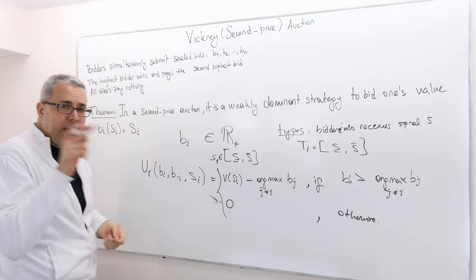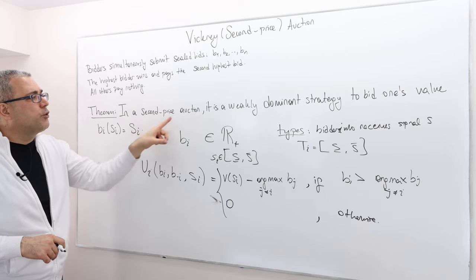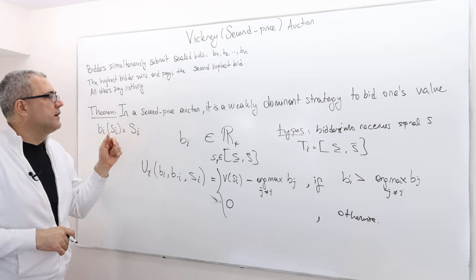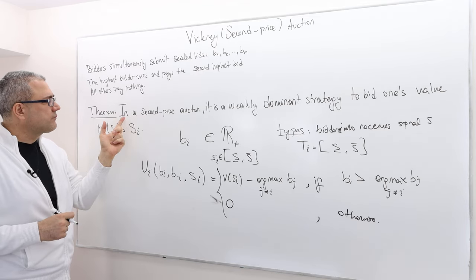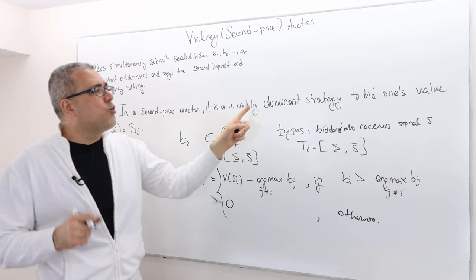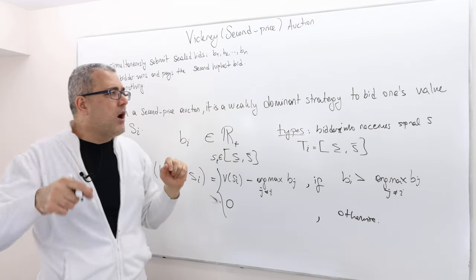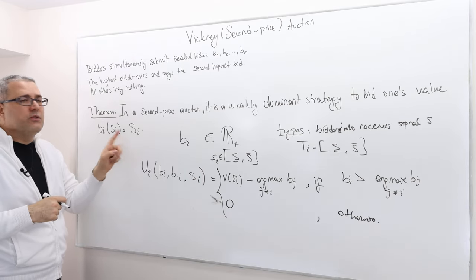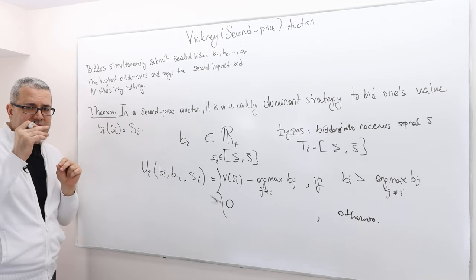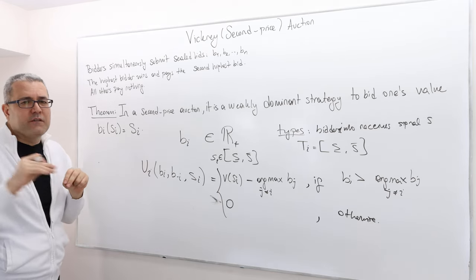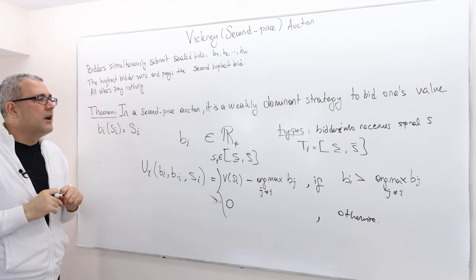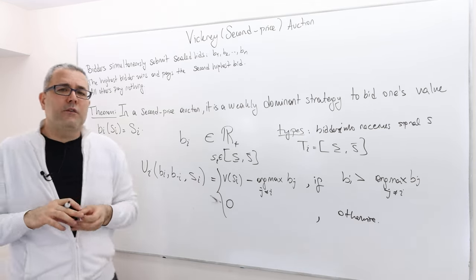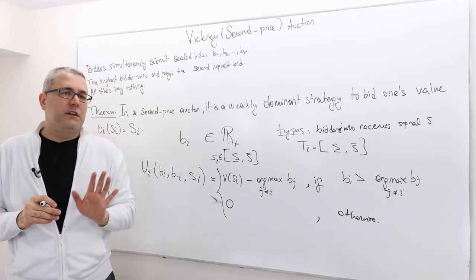Here is the theorem — I will prove it shortly. In a second price auction, it is a weakly dominant strategy to bid one's true value: B_I(S_I) = S_I. If your valuation is S_I, you bid exactly your valuation — no more, no less. Don't forget, though, there are a bunch of other equilibria of the Vickrey auction as well.